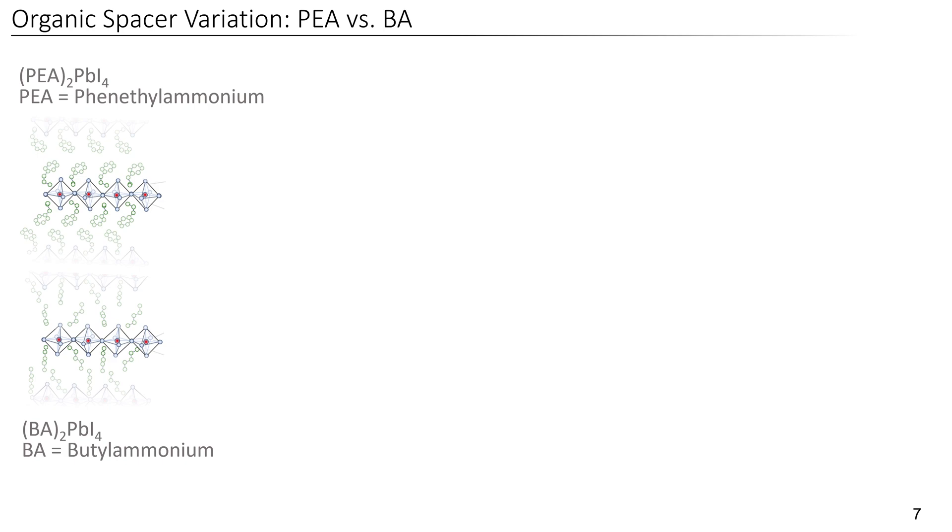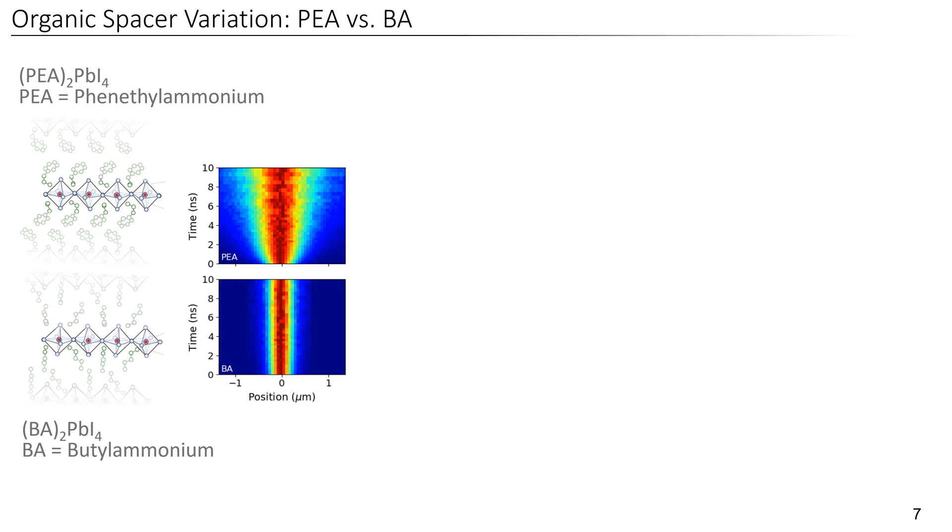For that, let's have a look at the two most commonly used organic spacers, phenethylammonium, which we just studied, and butylammonium. Here is again the result for phenethylammonium, where you can see a very clear and fast diffusion outwards of excitons. However, when we measured butylammonium, we observed a stunning difference. We could barely see any diffusion outwards for butylammonium.